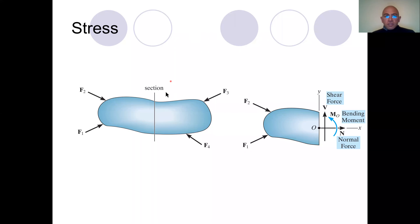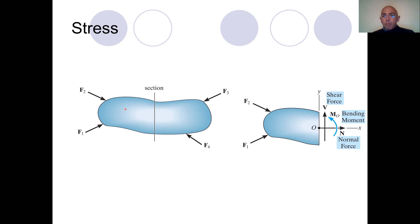We have external loads F1, F2, F3, F4 acting on our structure. A structure has a material inside and a certain geometry. When the geometry changes, even if you have the same material, the structure will be different.